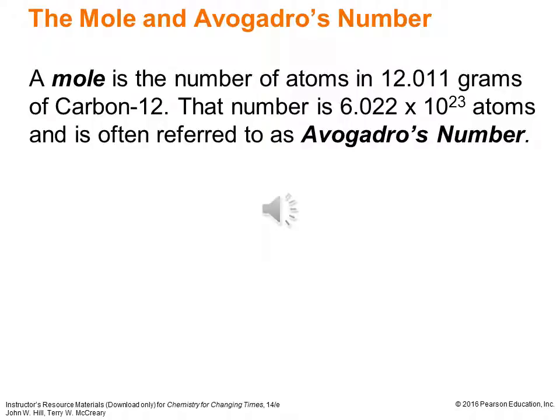Moving along to the mole concept — one of the key organizing themes for our whole course is the idea of the mole and Avogadro's number. A mole is the number of atoms in 12.011 grams of carbon-12. Based on work started by Amadeo Avogadro — he didn't live to see his number discovered, but laid the groundwork — that number is 6.022 × 10²³ atoms, often referred to as Avogadro's number. Any substance that you have one mole of, you have that many atoms and the characteristic value from the periodic table.